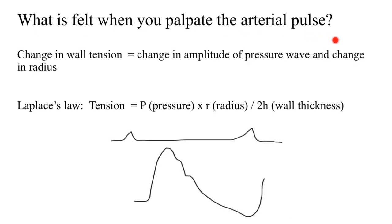What is felt when you palpate the arterial pulse? A change in the wall tension of the artery is what leads you to palpate the pulse. What governs this wall tension change is the change in the amplitude of the pressure wave — that is, the force with which the vessel hits your palpating finger — and also a change in the radius of that artery. All these changes are governed by Laplace's law, in which the tension of the wall in the artery is equal to pressure times radius divided by wall thickness. When there is a change in the pressure and also the radius of the artery between systole and diastole, that is when a change in tension is appreciated and hence you are able to palpate that artery.